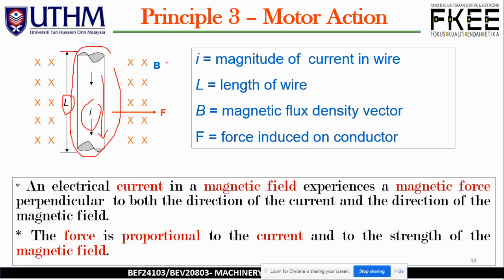We have vectors B and F. B stands for flux density, and F is the force induced on the conductor. The direction of B is into the page, and F is directed to the right. Later we will see the left-hand rule to determine this direction.